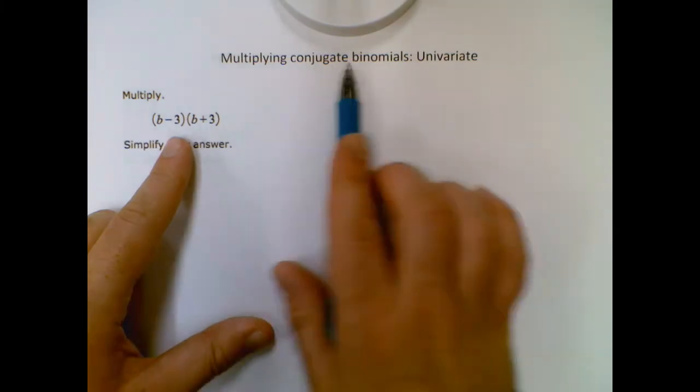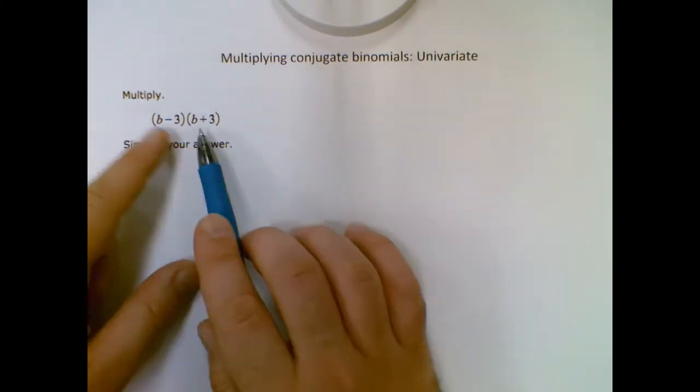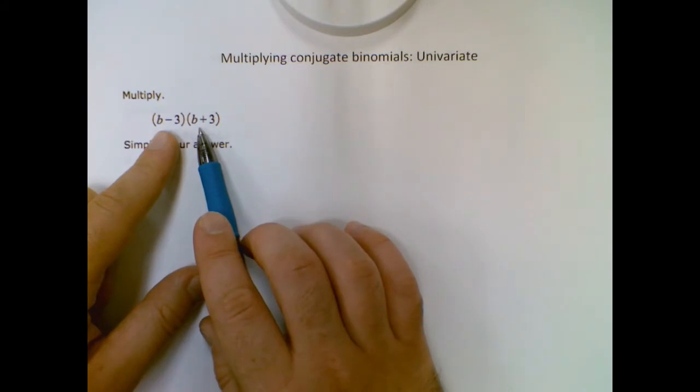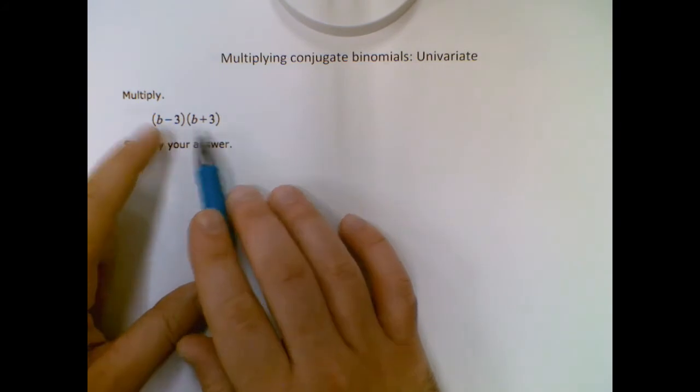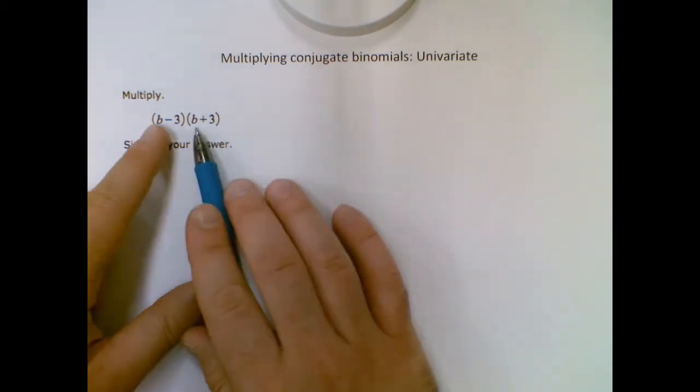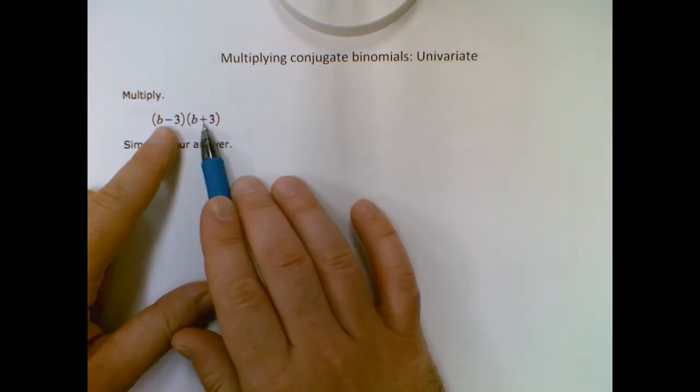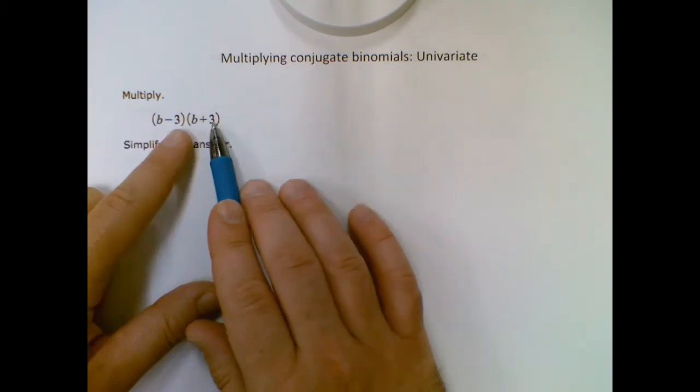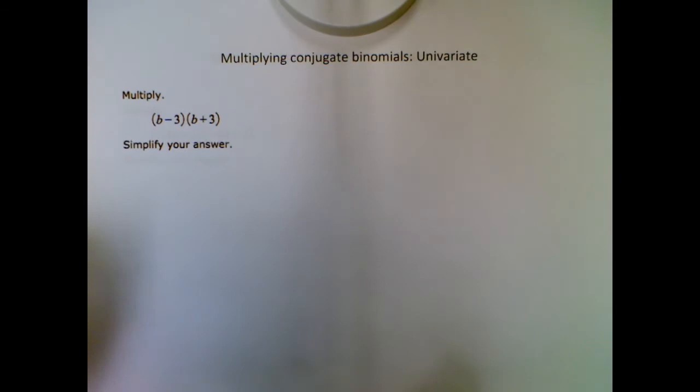And here, conjugate, we don't talk about as much. But what that means is, in this context, we'll get to the whole definition of conjugate, but in this context, we have binomials where everything's exactly the same except one is a positive sign, one's an addition, one's a subtraction. So B and 3 have to match, and one will be positive, one will be negative. It doesn't matter which one's which.